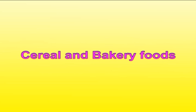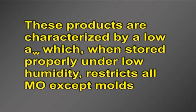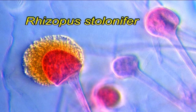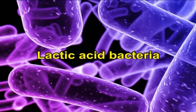Cereal and bakery foods are characterized by a low water activity, which when stored properly under low humidity restricts all microorganisms except molds. Rhizopus stolonifer is the common bread mold and other species from this genus spoil cereals and other baked goods. Refrigerated frozen dough products have more water and can be spoiled by lactic acid bacteria.